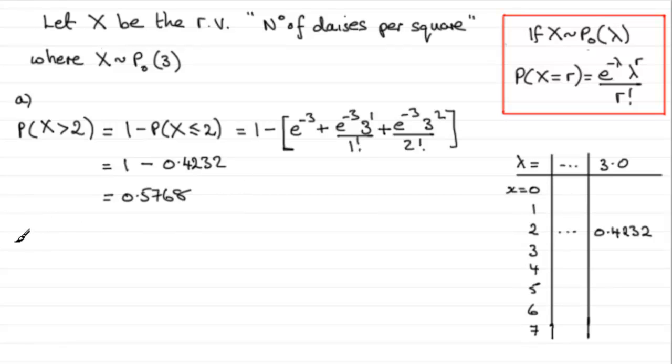And for part b, we've got to work out the probability that X equals 5 or 6. So to do that, we've got two options again. We can either work out the probabilities individually and add them together, or we could use the cumulative distribution tables. And if we do, then we're going to need to work out the probability that X is less than or equal to 6, and take away the probability that X is less than or equal to 4. So that will leave us just with 5 and 6.